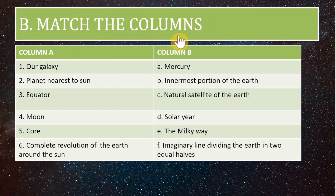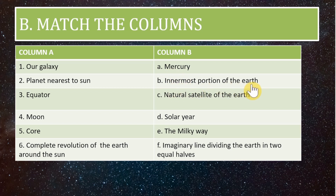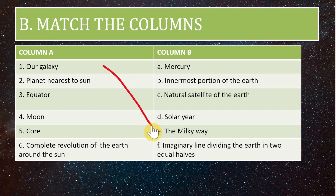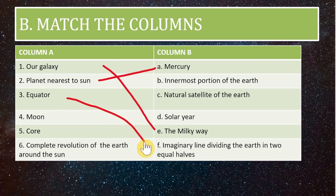Now let us check 'Match the Columns.' In Column A we have: our galaxy, planet nearest to sun, equator, moon, core, and complete revolution of the earth around the sun. In Column B we have: Mercury, innermost portion of the earth, natural satellite of the earth, solar year, the Milky Way, and imaginary line dividing the earth into equal halves. Our galaxy matches with Milky Way, and the planet nearest to the sun is Mercury. Equator is the imaginary line dividing the earth into equal halves.